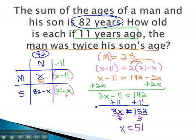Dividing both sides by 3 will give us x equals 51. The man, or x, is 51. To find the son, we simply do 82 minus the 51, and we get 31. The man is 51. The son is 31.